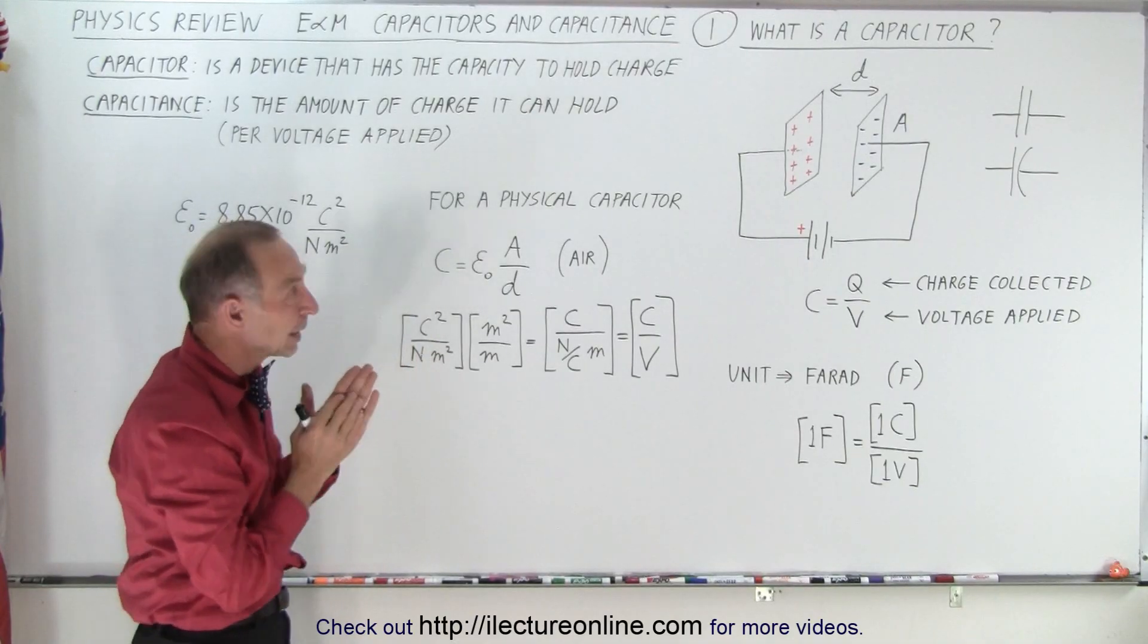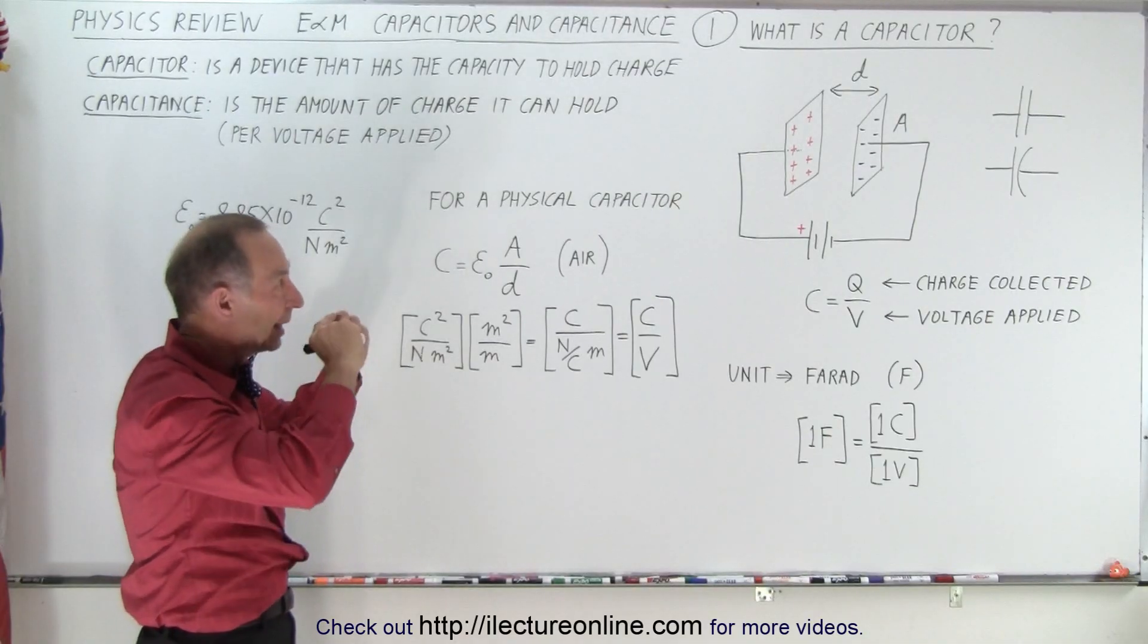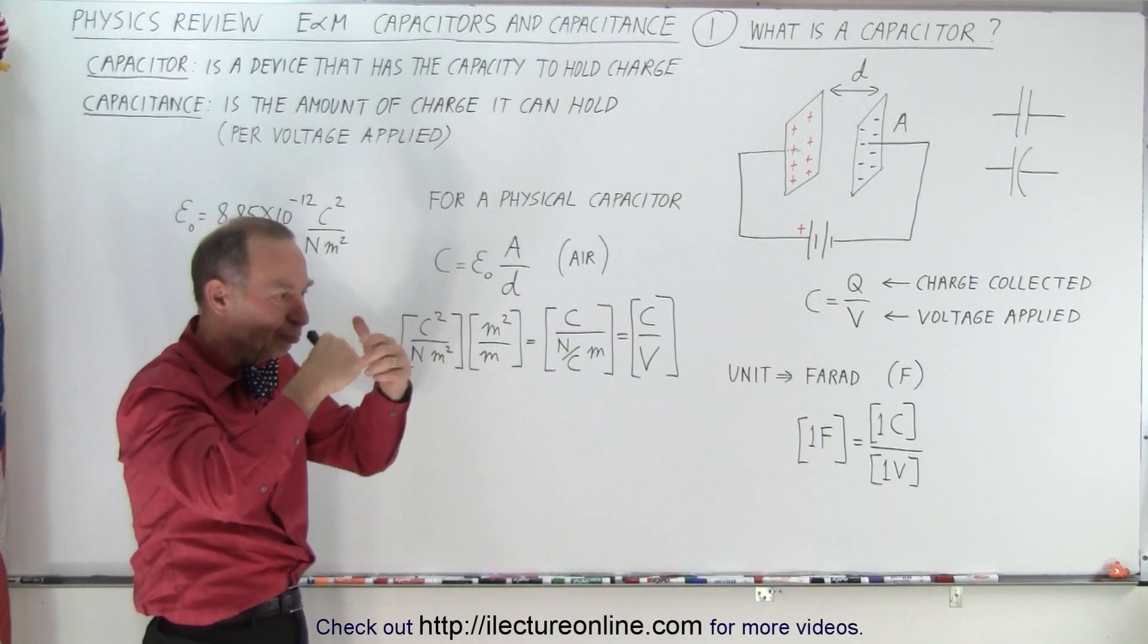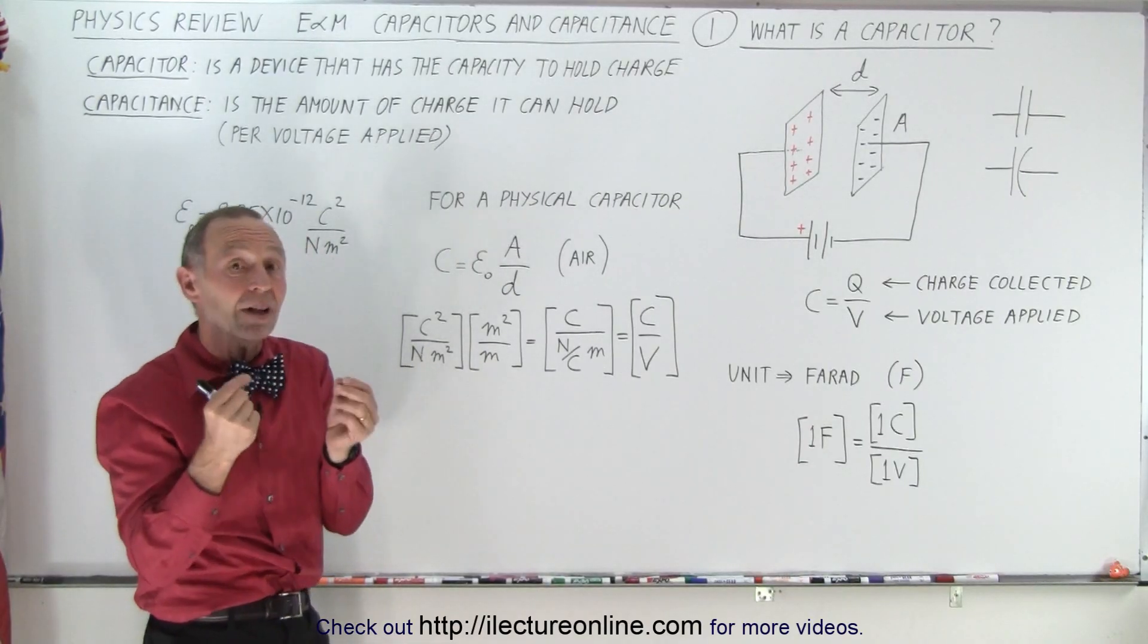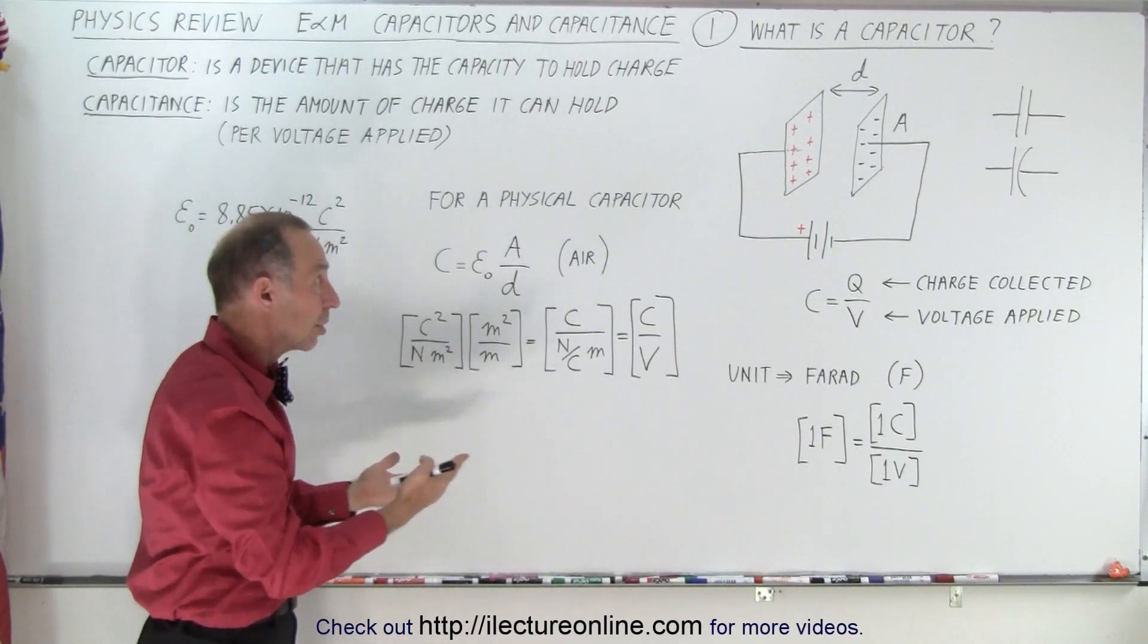Now typically if you want to turn it into a useful device, what they do is they put some insulating material in between, a dielectric material, and then they roll it up into a little cylindrical device that they can then encapsulate and then it's a lot easier to use that in electronics.